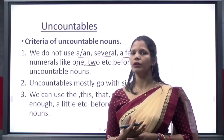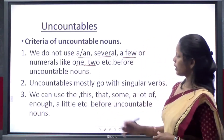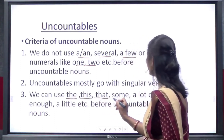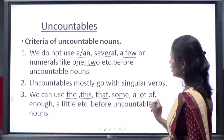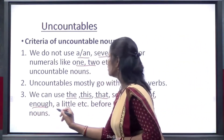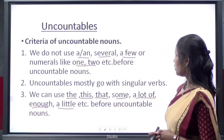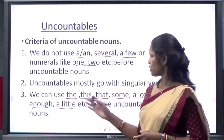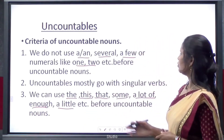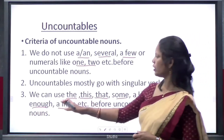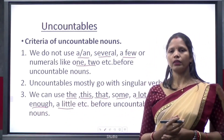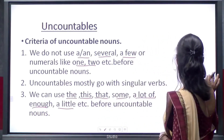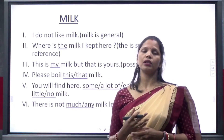The third criterion is we can use words like 'the', 'this', 'that', 'some', 'a lot of', 'enough', and 'a little' before uncountable nouns. So let's see how we can use different words before uncountable nouns with the example of milk.